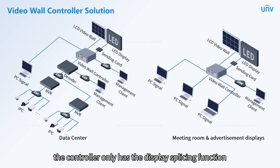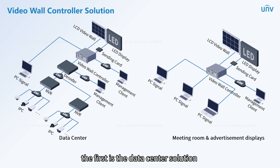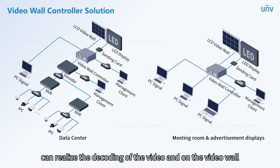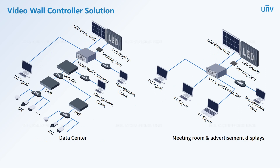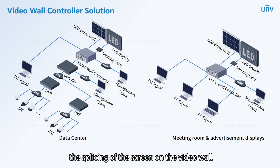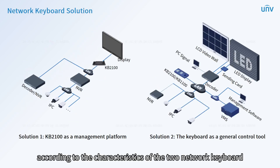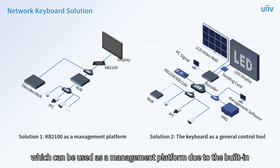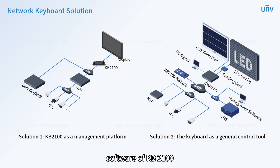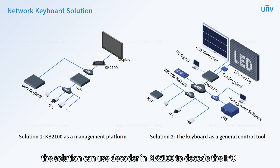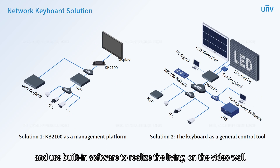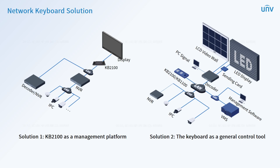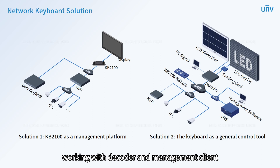The controller only has the display splicing function and can provide two solutions. The first is the data center solution: with IP cameras and the controller, video decoding and display on the video wall can be realized. The second is to access PC signal to achieve screen splicing on the video wall, suitable for conference or advertising display scenarios. According to the characteristics of the two network keyboards, two solutions can be provided. The first is the KB2100 solution, used as a management platform due to its built-in software, decoding IPC live video and realizing display splicing on the video wall. The second is the conventional solution, using the keyboard as a control tool working with a decoder and management client to achieve video wall operations.